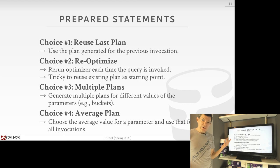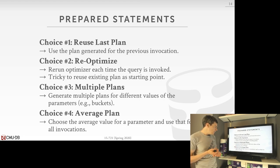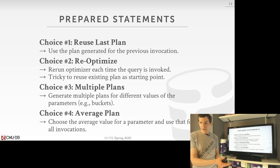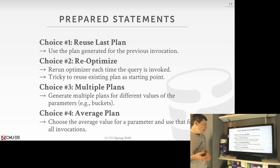For one variable, generating a plan per histogram bucket is easy. With multiple variables, the number of plans could explode exponentially, making it expensive. The last approach is to infer what columns are being accessed and use the average statistical value from those columns as the input parameter when sending the prepared statement through the optimizer. There's no single approach all systems use.